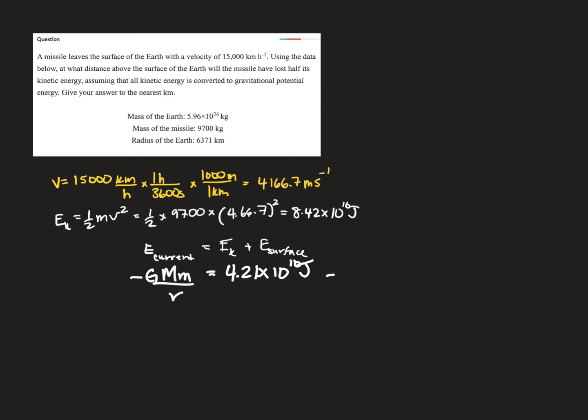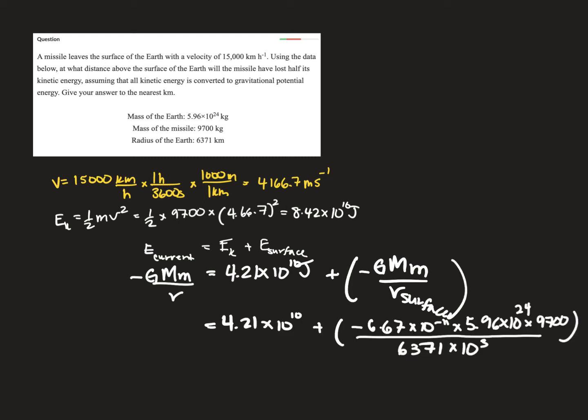Now we also have the value that we had at the surface of the Earth. So let me put in some values here. Let me just calculate and write down the right side first. So we've got this negative sign because it's gravitational potential. Here is my value of capital G, our universal gravitational constant. I have the mass of the Earth, the mass of the missile, and here is the radius of the Earth.